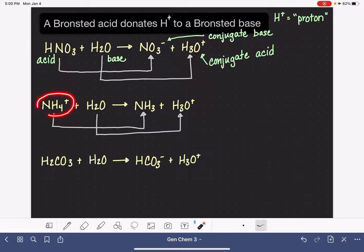Now we need to analyze how NH4-plus turns into NH3. We can see that it is losing a hydrogen, going from 4 down to 3. Losing a hydrogen or donating that hydrogen, that makes it the acid. And the NH3 is the conjugate base.